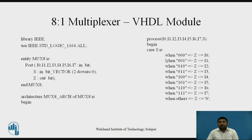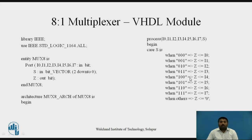Inside the process, we have written all the cases using a case statement — case S, where S is the select line. Because the select line is 3 bits, there are 8 combinations. When the combination is 000, Z is assigned the value of i0. When S has combination 001, Z is assigned the value of i1. This way you write for all combinations of S. If S has a value not part of these combinations, Z is assigned 0.